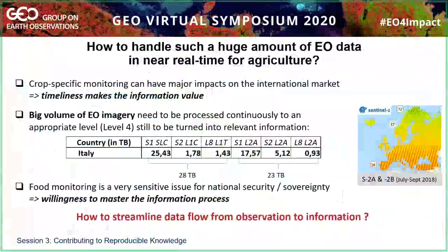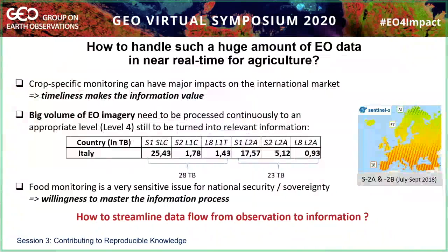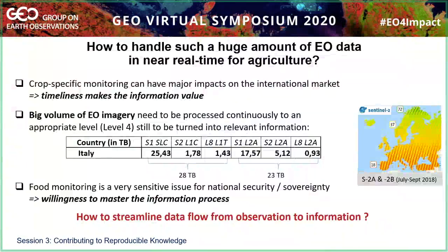The question is: how to handle such a huge amount of EO data in near real time for agriculture? One key specificity of operational agriculture applications is the fact that you must be in real time. The value of the information in agriculture is its timeliness. Crop-specific monitoring information can have impact on prices on the market, so you need to get this information within the season — not six months or three months after the end of the season. You need to process it continuously along the season into relevant products. For illustration, you can see what this volume of data looks like over a country like Italy — which is significant.